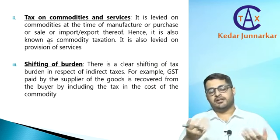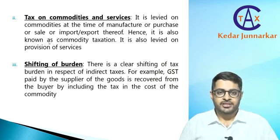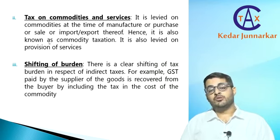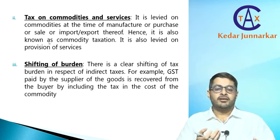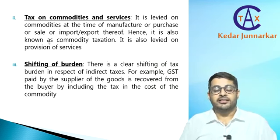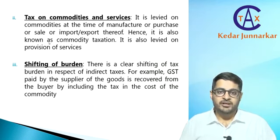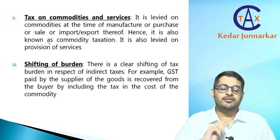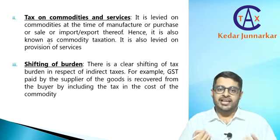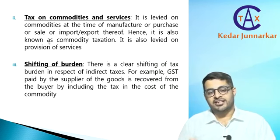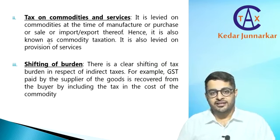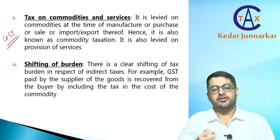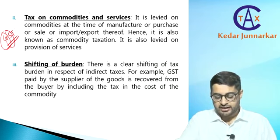Earlier there were different taxes on different taxable events. A taxable event is an event due to which tax becomes payable. For example, excise duty was payable on manufacture of goods — when value is added to raw material and a new and distinct commodity comes into existence, that was manufacture. For instance, if raw material is cotton and the final product is cloth, a new commodity has come into existence and excise duty was payable on that.